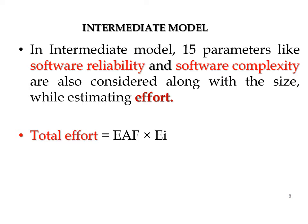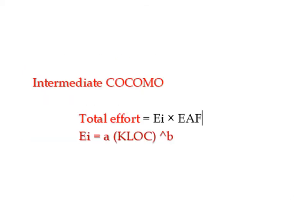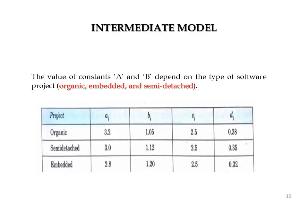In the Intermediate model, 15 parameters such as software reliability and software complexity are considered along with size when estimating effort. The project attributes being estimated include effort, development time, cost, and staff size. The total effort is: Effort = EIF × EI, where EI = A × (KLOC)^B. The A and B values are obtained from historical data. If the project is organic, the ABCD values follow the first row; if embedded, A=2.8, B=1.20, C=2.5, D=0.32.